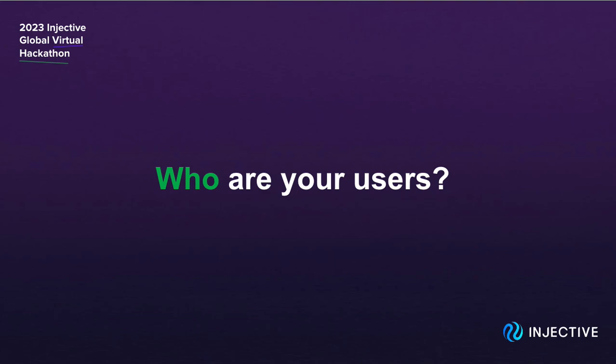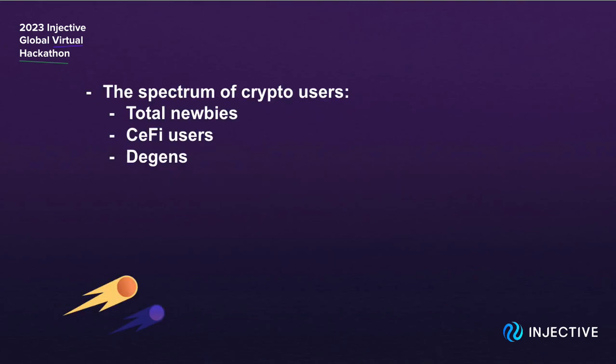There are three main questions we need to ask: who, how, and why. The first question is: who are your users? In the crypto world, we think of the user space as a spectrum, and you should clearly define which part of the user audience you're trying to target. In crypto, the spectrum is often defined by their level of knowledge about crypto.